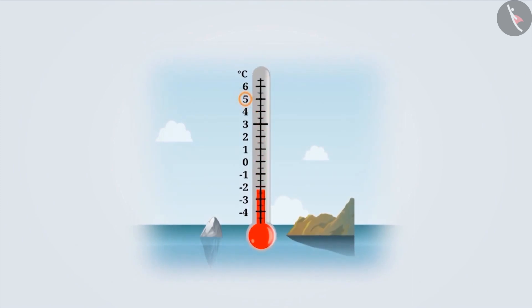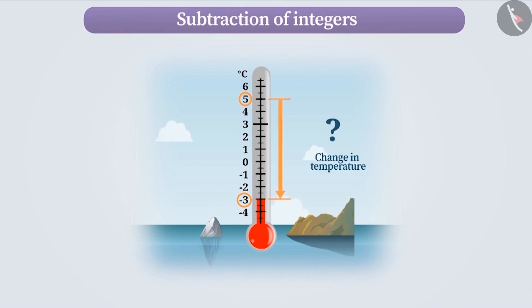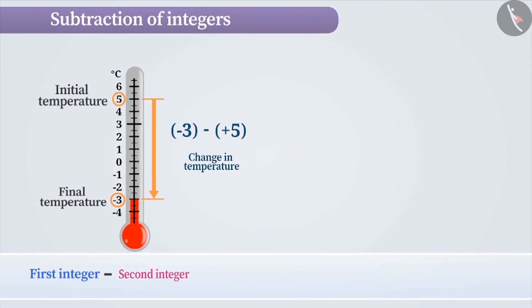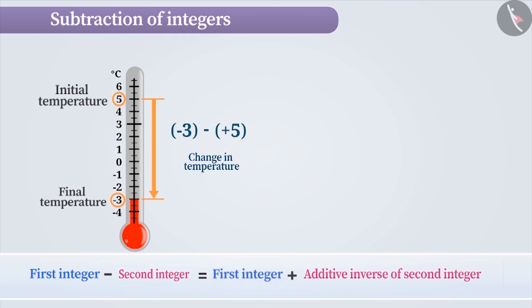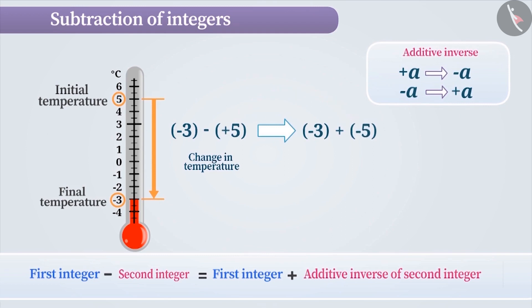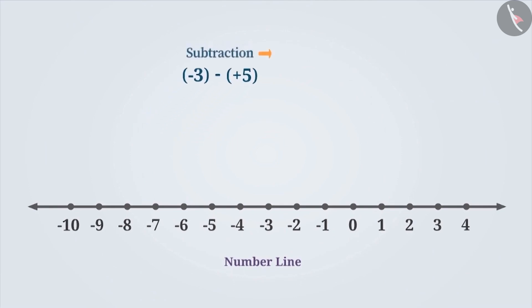Suppose the temperature decreases from plus 5 degrees centigrade to minus 3 degrees centigrade. Find out the change in temperature. In order to do so, we need to subtract the final temperature, minus 3 degrees, from the initial temperature of plus 5 degrees. Whenever we subtract one integer from another, we add the additive inverse of the integer being subtracted to the first integer. In this case, if we want to subtract plus 5 from minus 3, then we add to minus 3 the additive inverse of plus 5, that is, we add minus 5. And we've already learned how to add integers. Here, the addition of minus 3 plus minus 5 is minus 8.